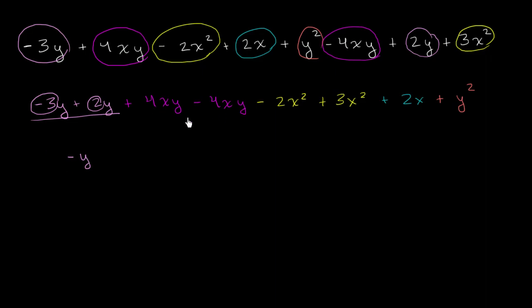Now let's look at the xy terms. If I have four xys and take away four xys, how many am I left with? I'm left with no xys. Or you could say, add the coefficients: four plus negative four gives you zero xys. Either way, these cancel out. If I have four of something and take away those four, I'm left with none of them.